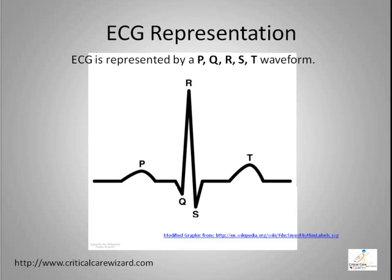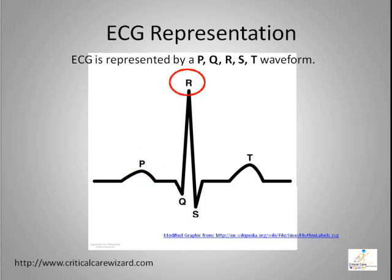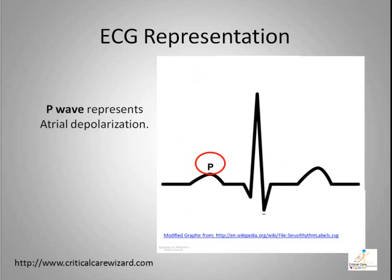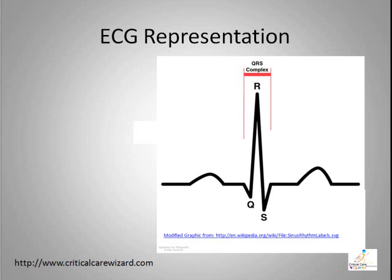As defined in Module 1, the electrophysiological activity of the myocardium creates a unique waveform when recorded on paper. This waveform is represented by the PQRST letters. When the atrial muscle is charged up or depolarized, it creates a P-wave.